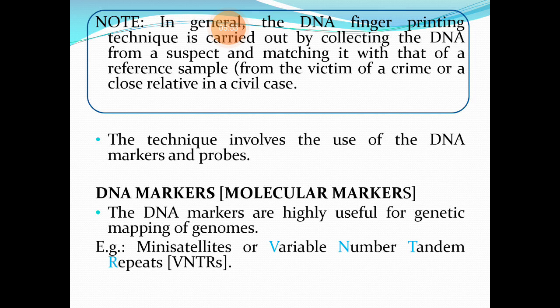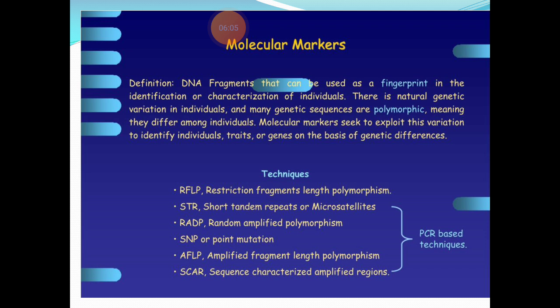The best examples of DNA markers are mini satellites or VNTRs — Variable Number Tandem Repeats. These are DNA fragments that can be used as a fingerprint in the identification or characterization of individuals as a molecular marker. There is a natural genetic variation in individuals, and many genetic sequences are polymorphic, meaning they differ among individuals.